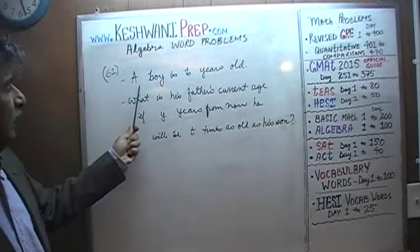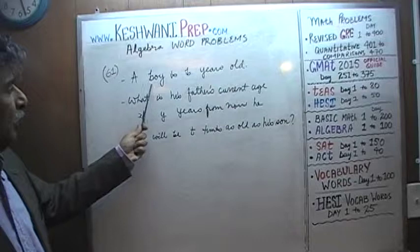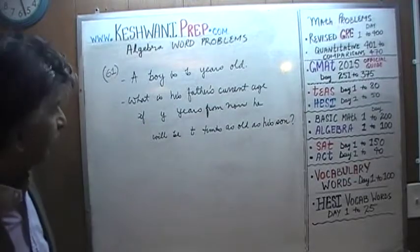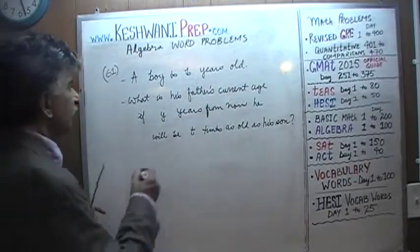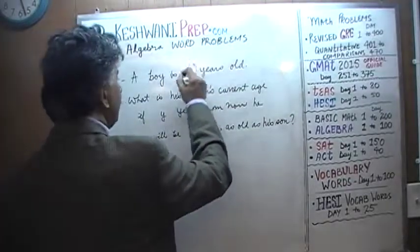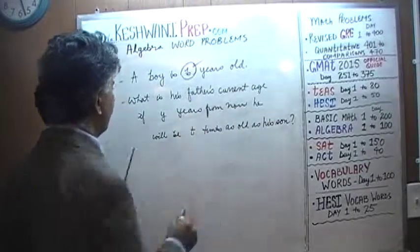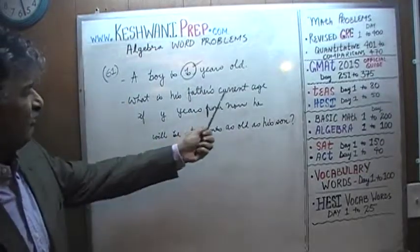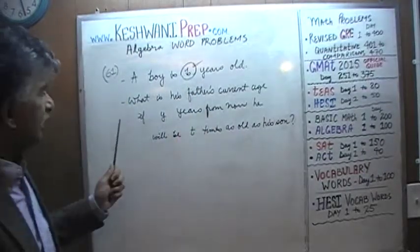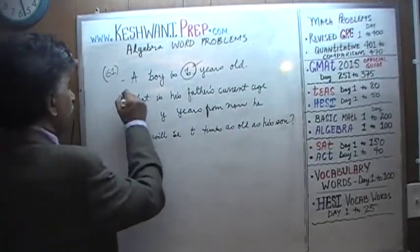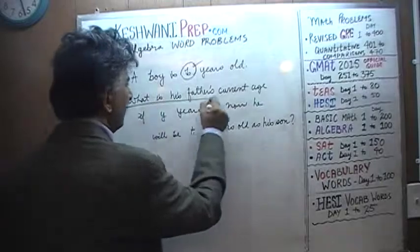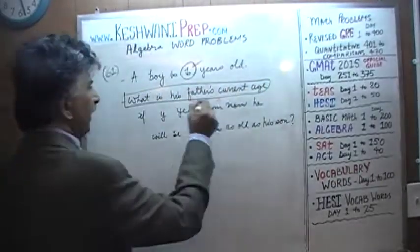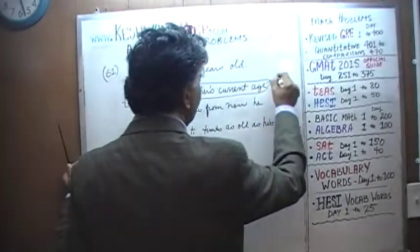We are told that a boy is b years old — that's a known quantity. The question is: what is his father's current age? That's the unknown — what we are solving for.